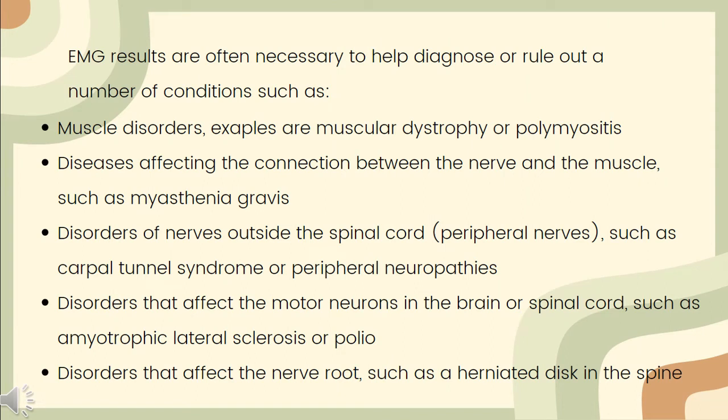EMG results are often necessary to help diagnose or rule out a number of conditions such as: first, muscle disorders, for example muscular dystrophy or polymyositis; second, diseases affecting the connection between the nerve and the muscle such as myasthenia gravis; third, disorders of nerves outside the spinal cord or peripheral nerves such as carpal tunnel syndrome or peripheral neuropathies; fourth, disorders that affect the motor neurons in the brain or spinal cord such as amyotrophic lateral sclerosis or polio; and lastly, disorders that affect the nerve root such as a herniated disc in the spine.